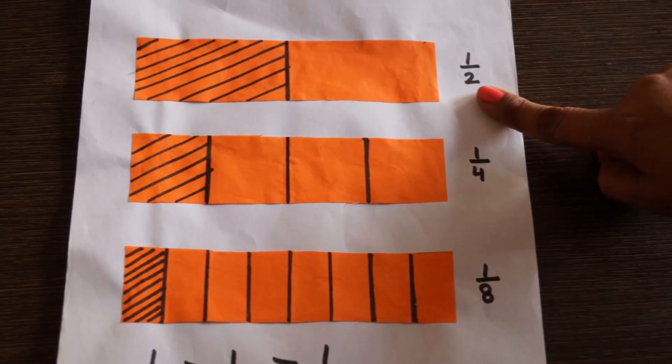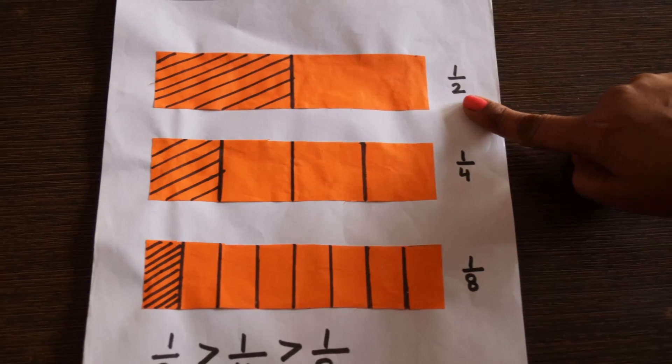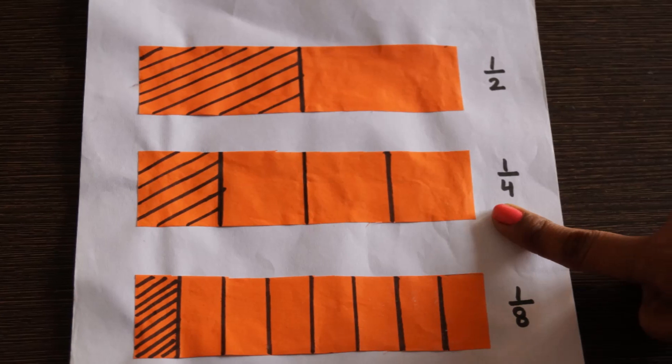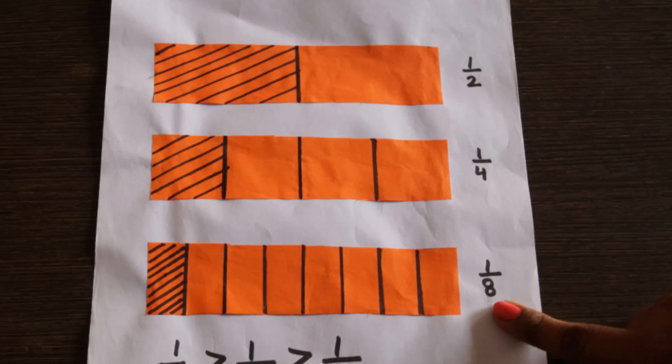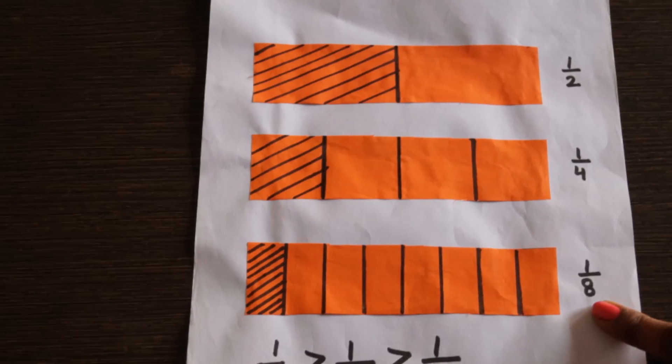We can observe that the shaded portion of the first strip represents one upon two, whereas the shaded portion of the second strip represents one upon four and the third strip represents one upon eight.